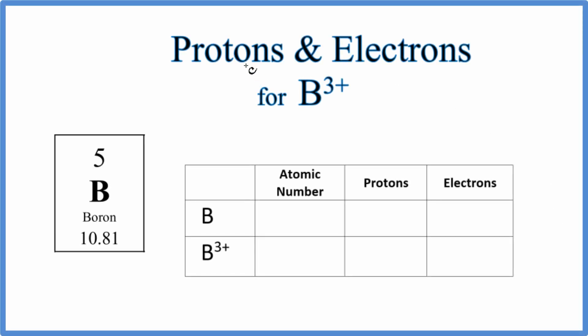In this video we'll find the number of protons and electrons for B3+, this is the boron ion. Before we find the boron ion, let's find neutral boron. We know it's neutral because there's no negative or positive sign after the symbol.